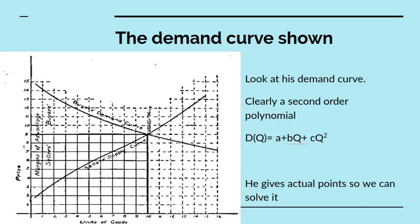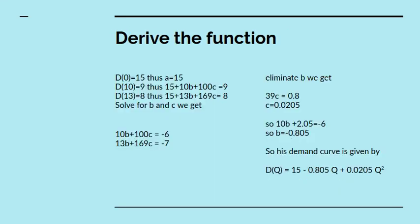You need at least a second order polynomial to do that. Since Marshall gives actual points, we can solve this polynomial. He shows that when demand is 0, demand is 0 and price is 15. So we know a must be 15 in his equation. When demand is 10, price is 9. When demand is 13, price is 8. So we can fill these in and get two other points of his polynomial.